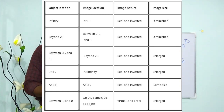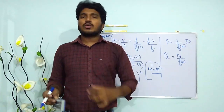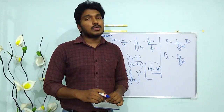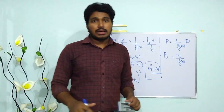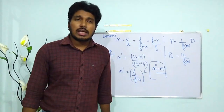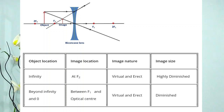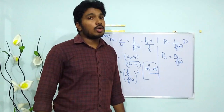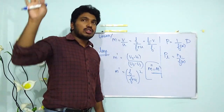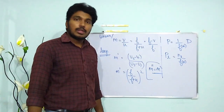The case of an object between F and O is used in a simple microscope and in a compound microscope. In the case of a concave lens, regardless of the position of the object, the image formed is always virtual. Please make a special note of that.